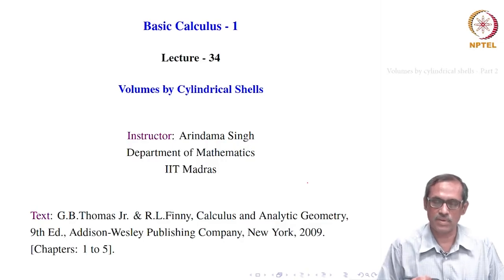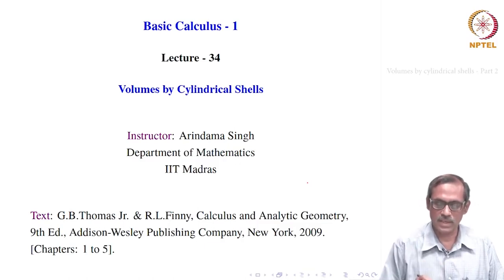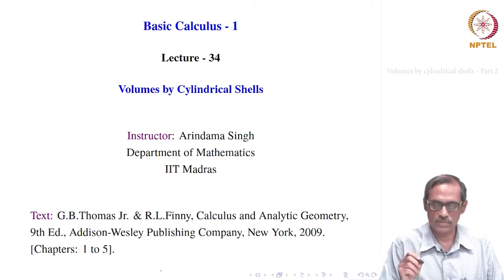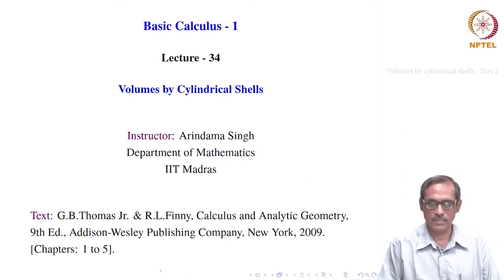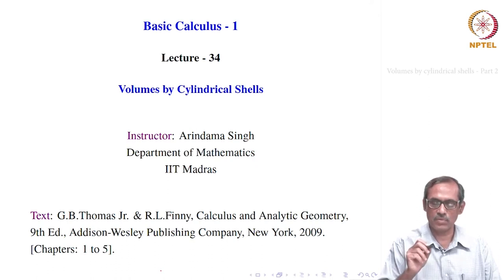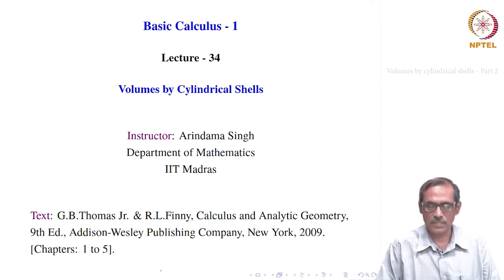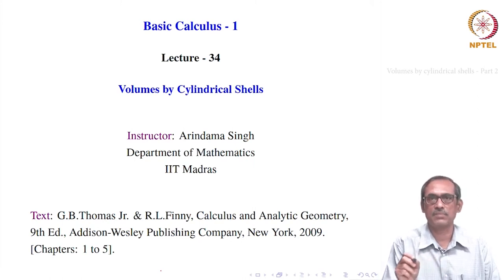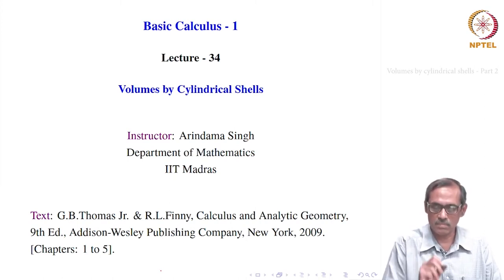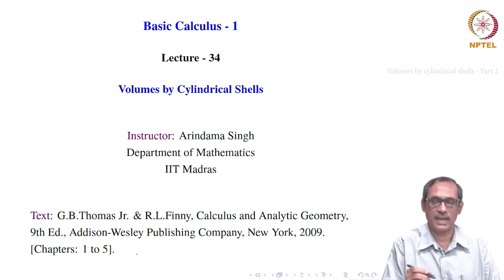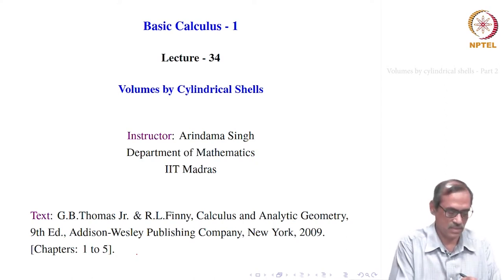This is lecture 34 of Basic Calculus 1. We are discussing how to compute the volumes of solids of revolution. We came to the Washer method — that is the last thing we considered. Now we will give another alternative method to compute the volume of solids of revolution, called cylindrical shells. We will be going through Riemann sums again, but in a different way.